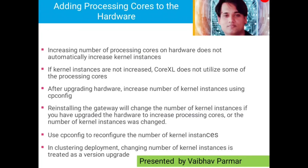After upgrading hardware, increase the number of kernel instances using cpconfig. Even if Core XL is already enabled and cores are assigned, after upgrading to a new version you must perform the same steps so that cores are reassigned correctly to the upgraded version. You can perform this work using cpconfig. I will be creating separate videos on how to assign Core XL on a gateway.